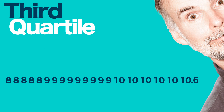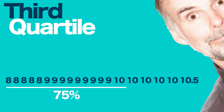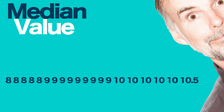Next, you identified the third quartile, which is the value under which 75% of the data points are found. For sheeter A, the third quartile is the 15th and 16th measurements added together and divided by two, resulting in the value of 10 millimeters. Finally, you determined the median value, which is the middle number of a sorted data set. For sheeter A, the median is the 10th and 11th measurements added together and divided by two, resulting in a value of 9 millimeters.